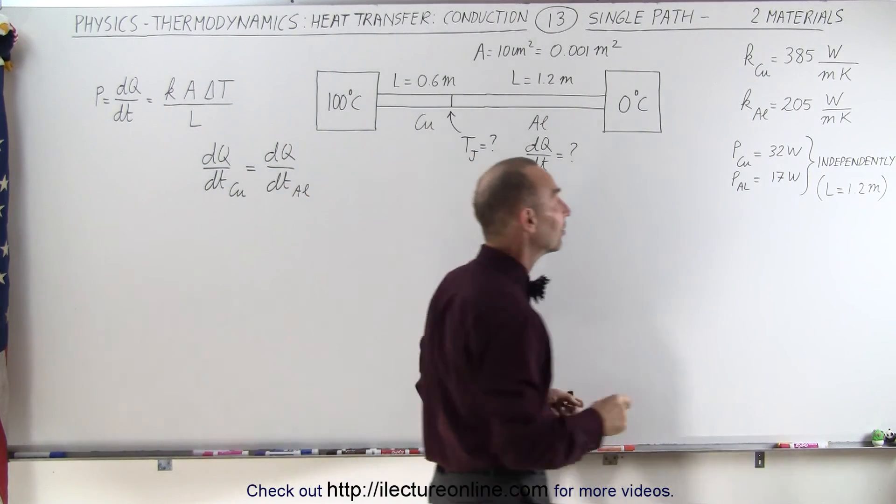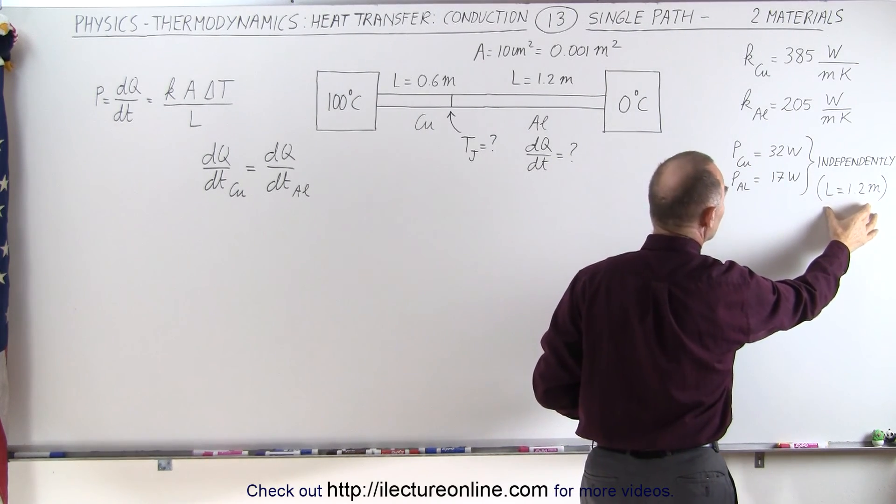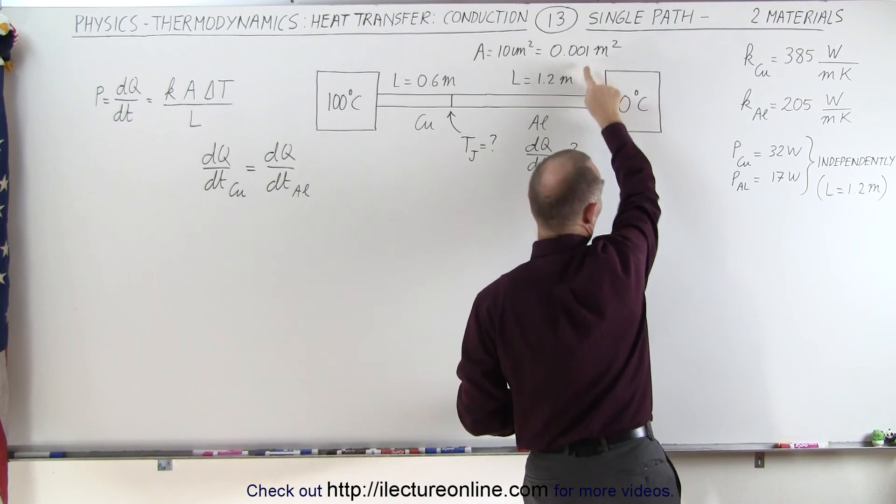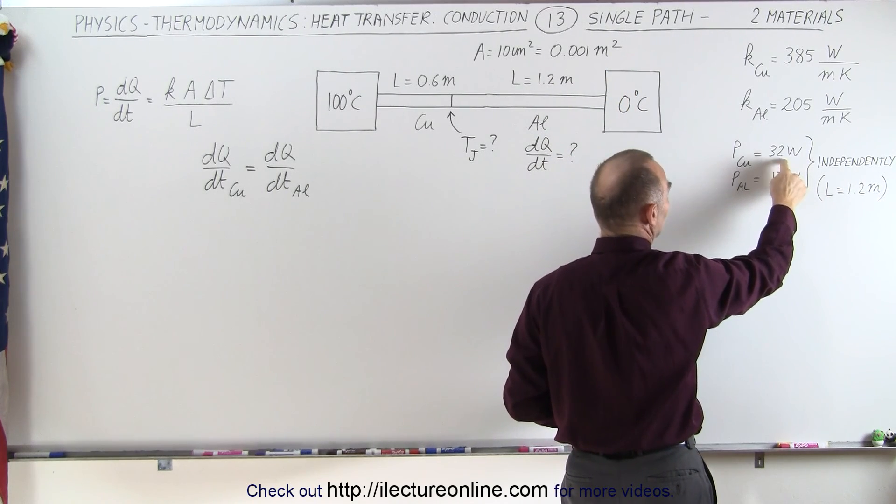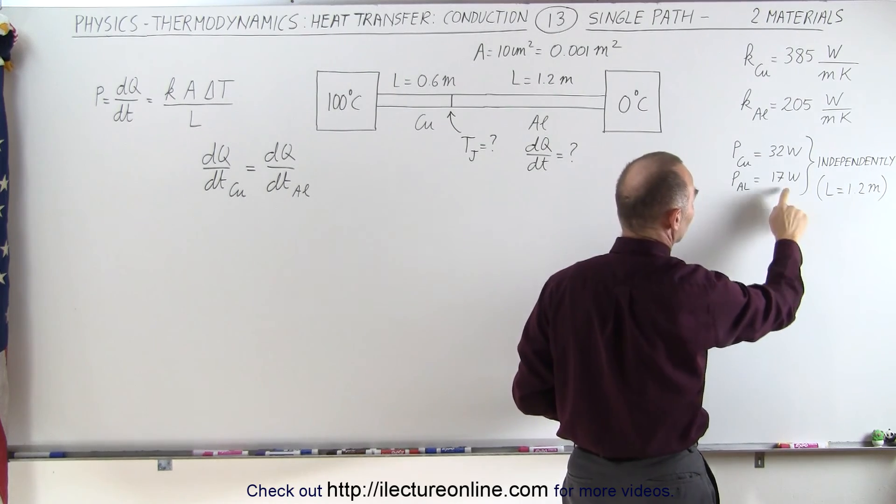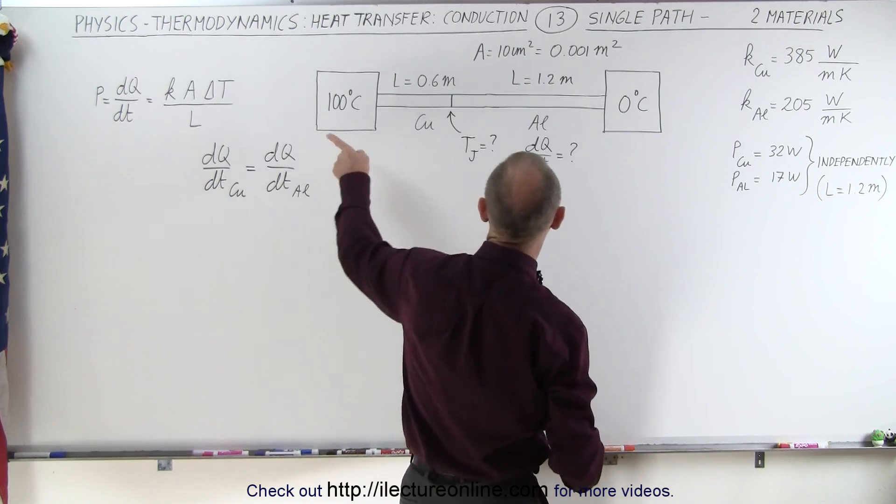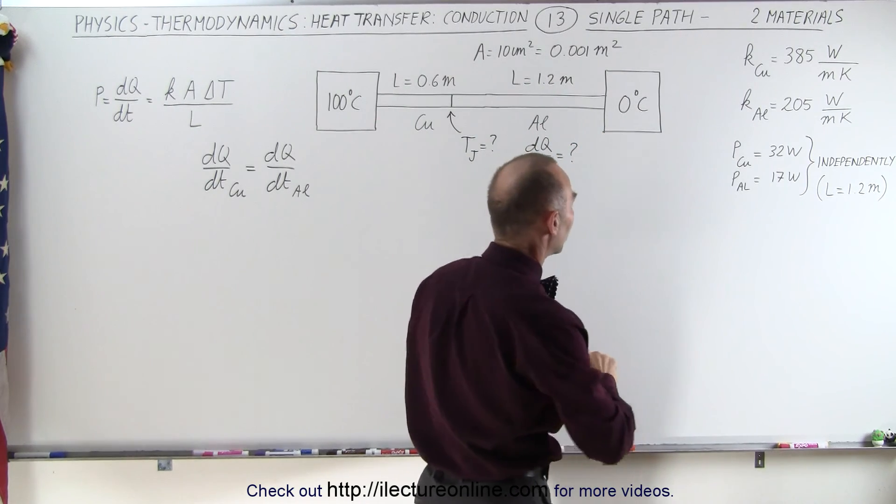Well, if we realize that the heat transfer if it was a copper section alone, length of 1.2 meters and the same cross-sectional area, we had a heat transfer of 32 watts, and for aluminum for the same geometric conditions it was 17 watts. Yes, we can figure out very quickly what the heat conductivity would be in this situation as follows.